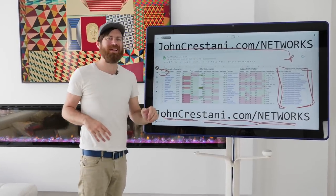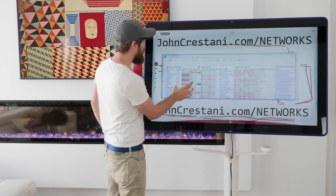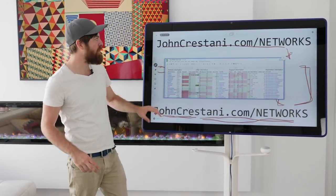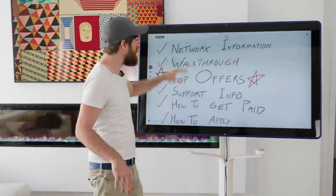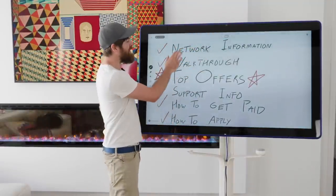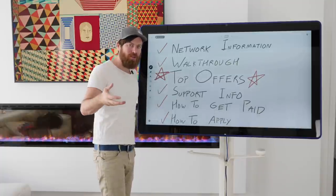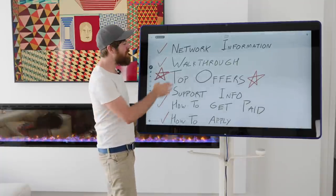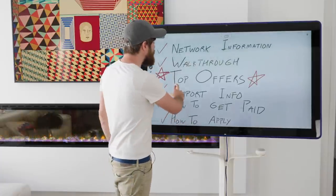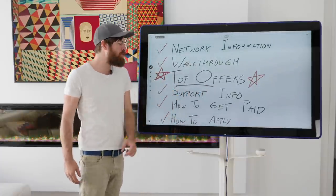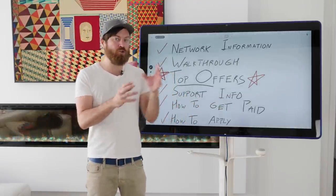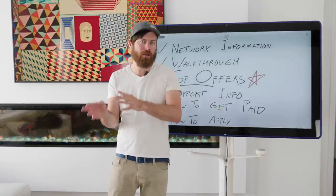JohnCrestani.com/networks is what I'll be looking through, where I assess all of the various information about this affiliate program. We'll go into this on my computer, but I'll be going over a number of things, including the network information, who can apply, who can get accepted. I'll go through a walkthrough of their affiliate interface. I'll go over the top offers or top links you can use to promote it. I'll also go over support information, where you can find information on training or how to get traffic.